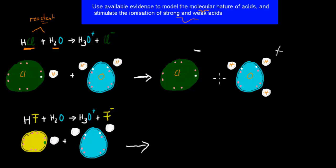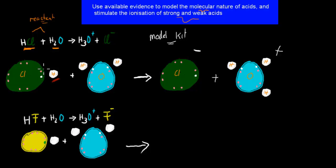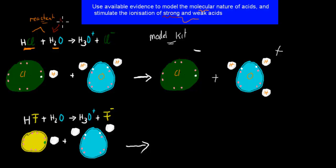There are now ionic molecules, where there were covalent ones beforehand. You won't be doing this with drawings — you'll most likely be doing this with your model kit. The things you should focus on are seeing where the hydrogen goes, and realizing that the electron doesn't get removed — it's still there. We've done this with our strong acid, hydrochloric acid. Now we're going to do the same procedure with a weak acid.